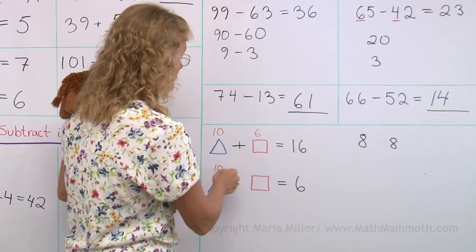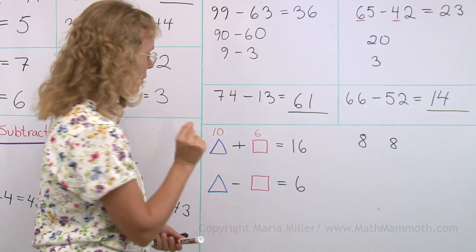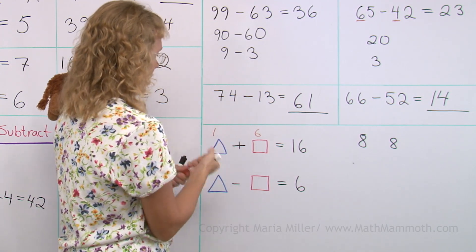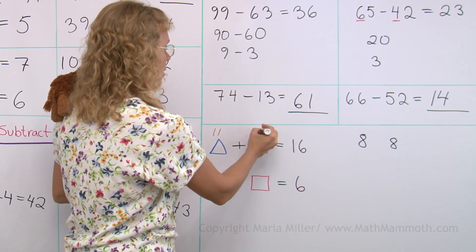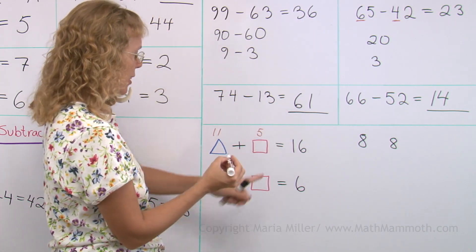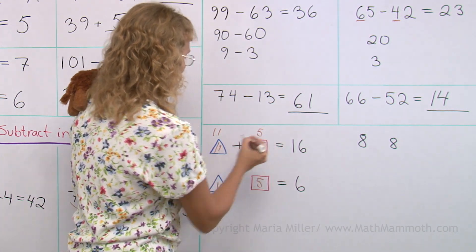So let's just change these numbers just a little bit. If I change this to 11, then this needs to change to 5. And now I get 16 here. 11 minus 5 works here too. Aha! The puzzle is solved.